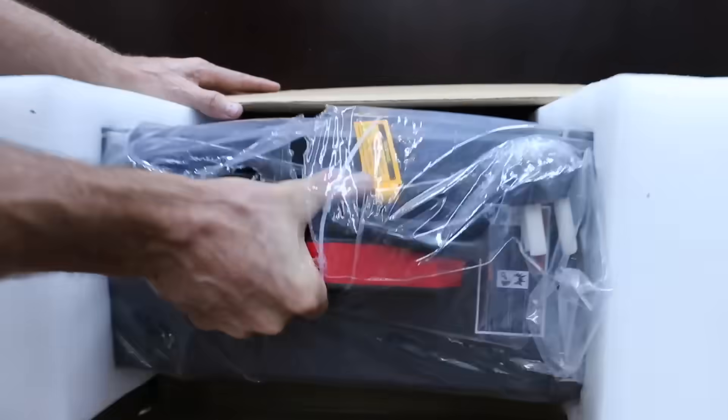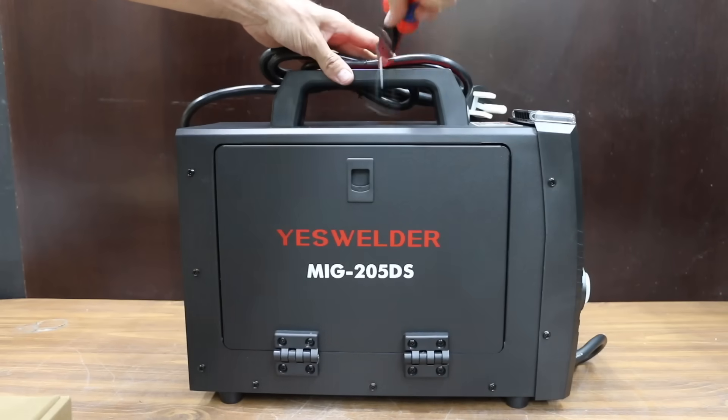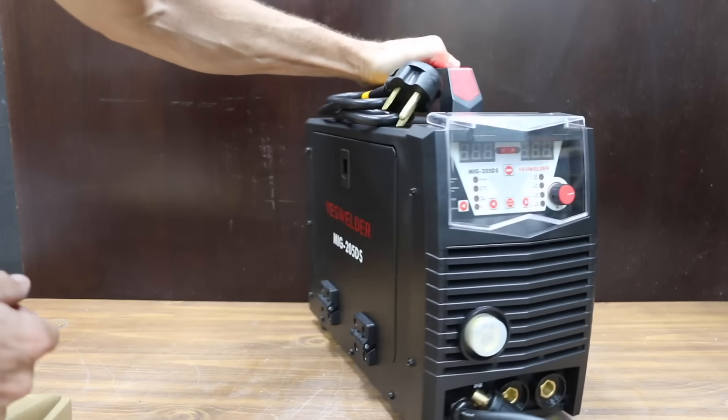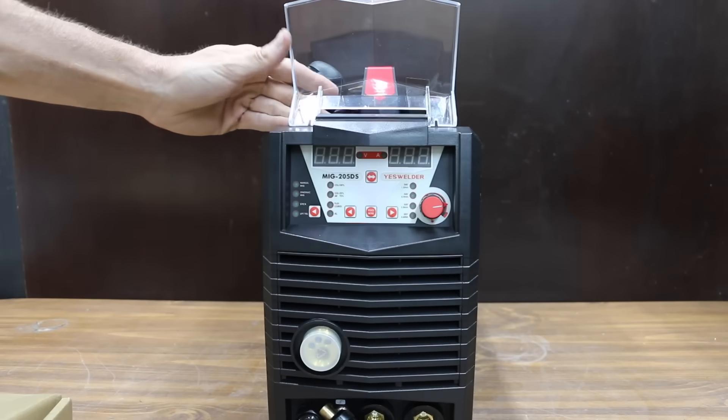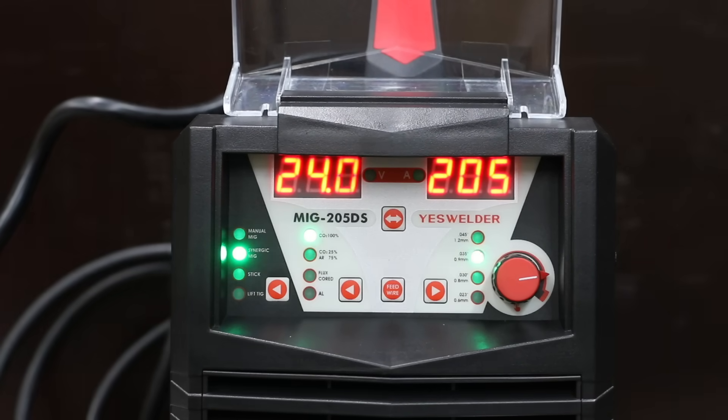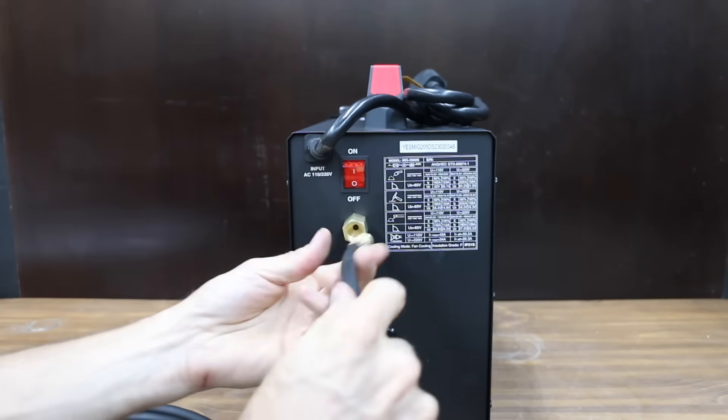At a price of $360 is this Yes Welder MIG 205DS. It claims to offer a full 30 to 205 amps. Automatic protection function for overcurrent, overvoltage, and overheating. 110-220 dual-voltage capable. Includes gas, gasless MIG, TIG, and arc welding. The Yes Welder is made in China.